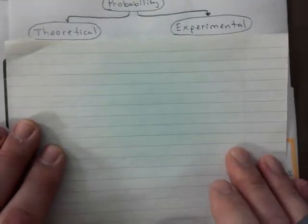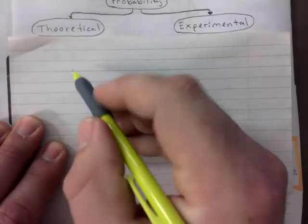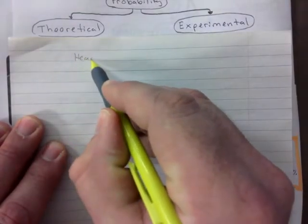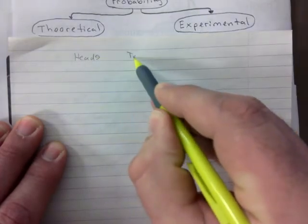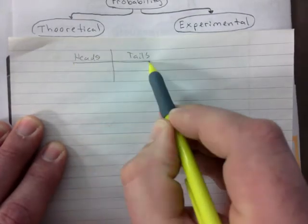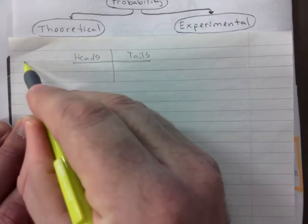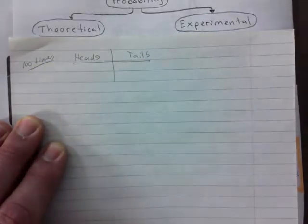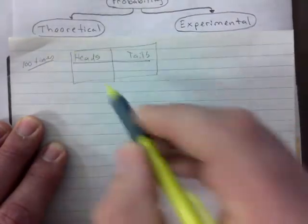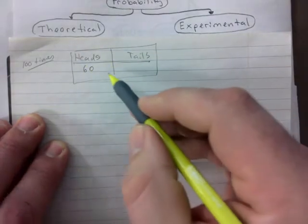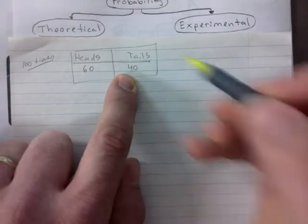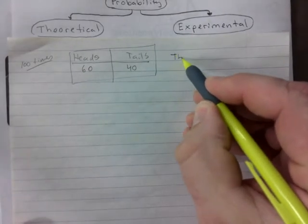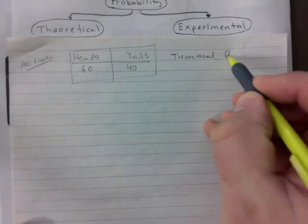You don't need to write this down because you will see it, but let's say you're flipping a coin. You have heads and tails. Let's say you're flipping it a hundred times, recording your results, and at the end you get sixty times it landed on heads and forty times on tails. That's an experiment you just performed.